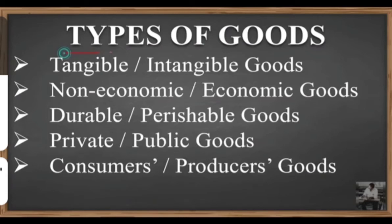Perishable goods cannot last for a long time and are consumed only once. Examples include milk, fruits, and vegetables — their quality deteriorates if kept for a longer period of time. Perishable goods can be consumed only one time and cannot last long. Durable goods, on the other hand, can last longer and be used repeatedly — examples are refrigerators, shoes, clothes, and televisions.